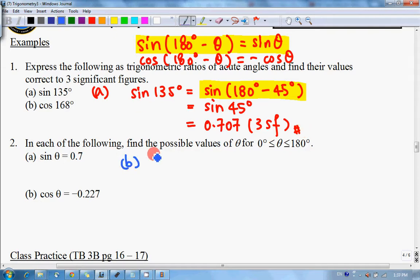If I look at part b, cosine 168 degrees, same thing, use the formula. First we have to change to 180 degree form. 168 is 180 degrees minus 12 degrees. Always change to 180 degrees minus another angle.